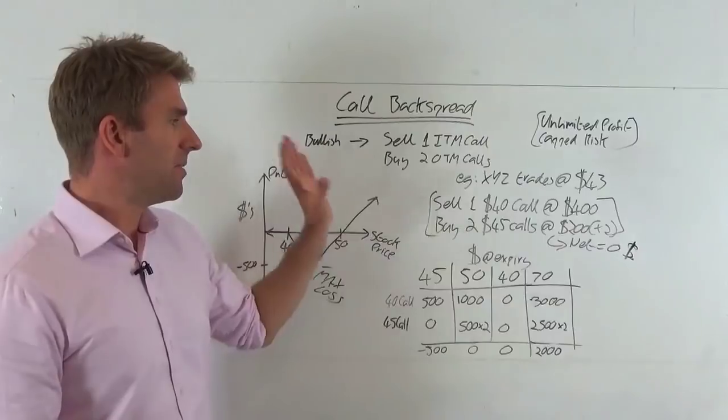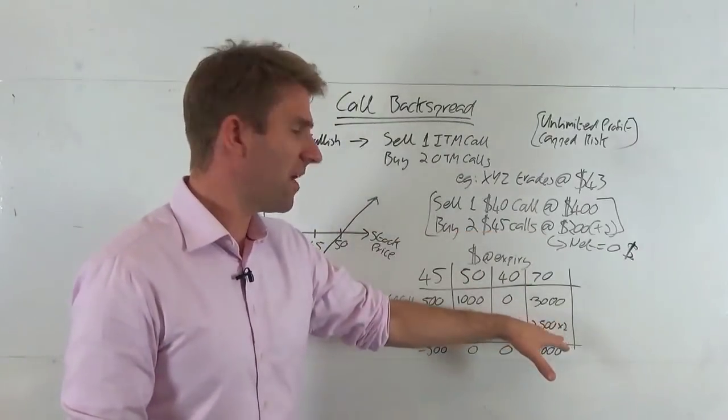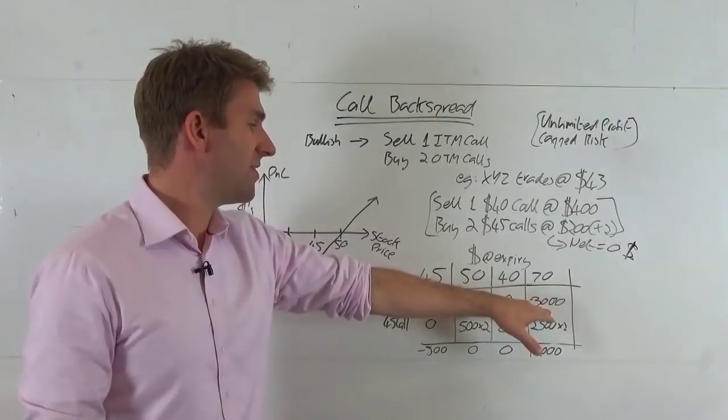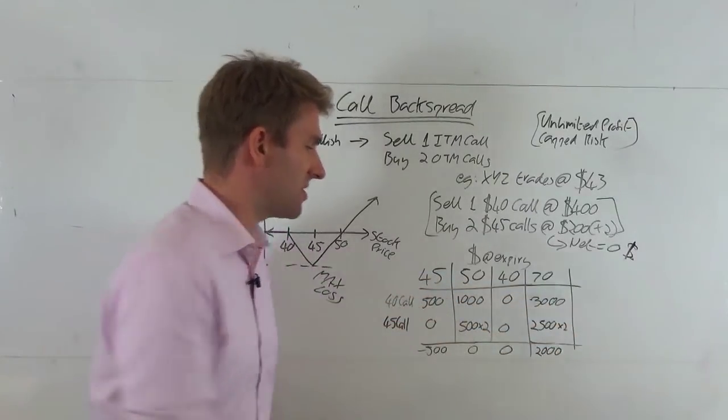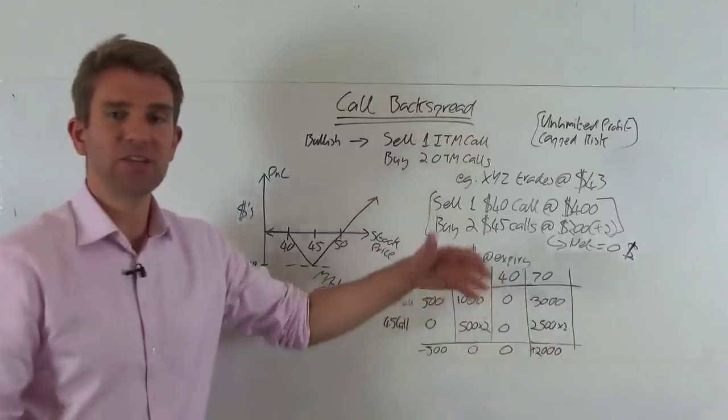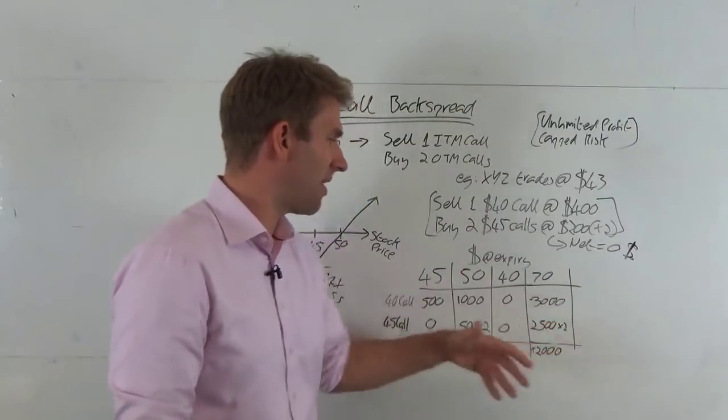The good thing is we bought two of these. So we're making 5,000 on that. We've lost 3,000. So five minus three is 2,000 net profit on that. And you can see, as we go up every $10, we're going to make an incremental amount of money.